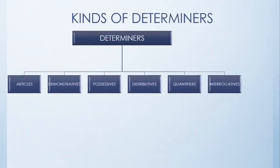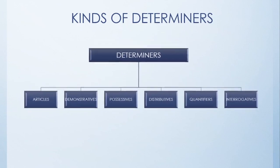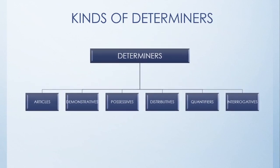We learned about what a determiner is and the differences between adjectives and determiners. Now let's learn the kinds of determiners. Determiners are of six kinds: articles, demonstratives, possessives, distributives, quantifiers, and interrogatives.